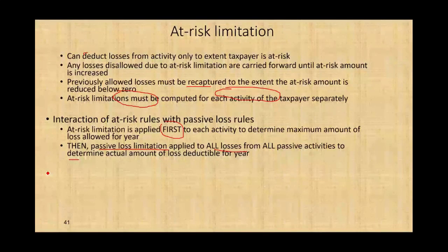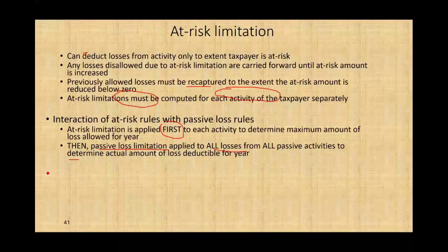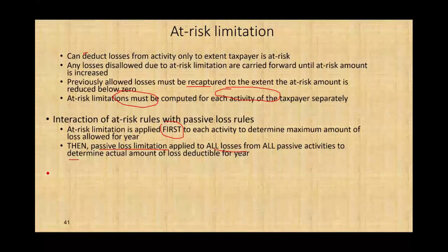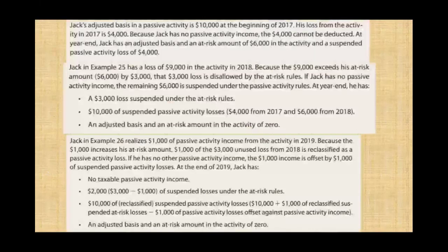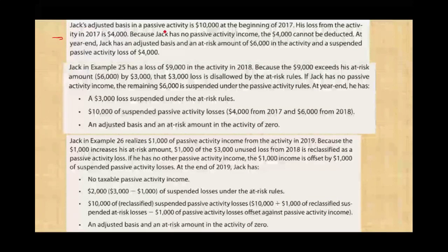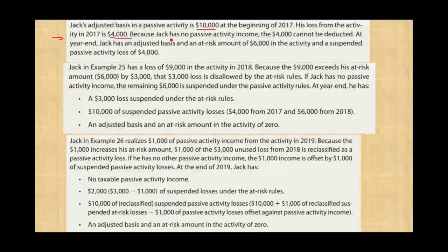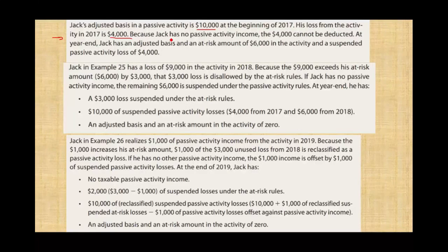The only way you're going to learn this is to look at a multi-year example. I'm going to be flipping between the PowerPoint slides and Excel, because you want to keep track of this in a spreadsheet. So let's start this example. Jake's adjusted basis in a passive activity is $10,000 at the beginning of 2017, and his loss from the activity in 2017 was $4,000.